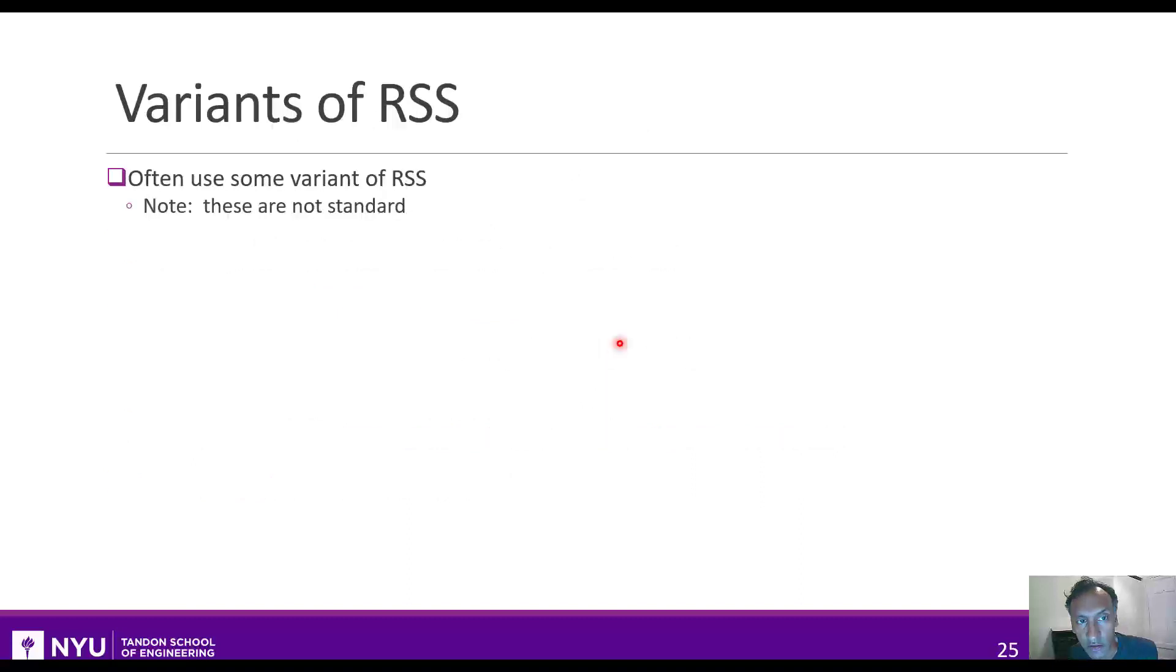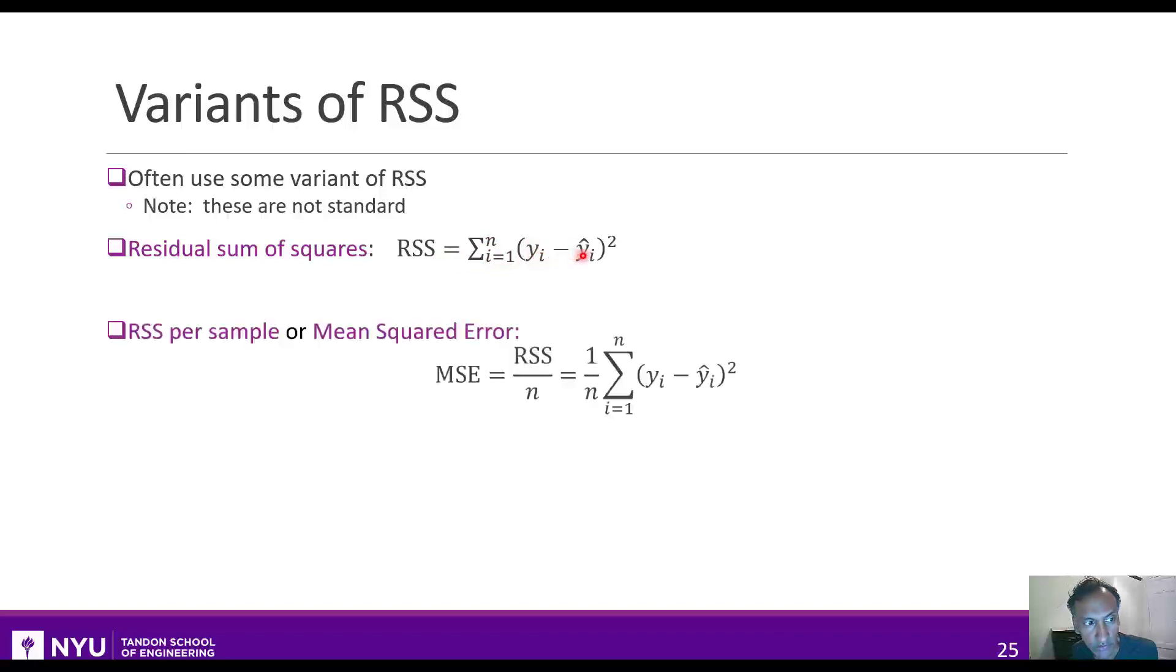Now, before I go on, there are a lot of other terms, or variants, of the residual sum of squares. The terminology is not exactly standard, so I'll just describe what I'll use in this course. This first is the residual sum of squares that we just saw, which is just the sum of the squared differences between the true values and the predicted values. You'll also sometimes see the residual sum of squares normalized by the sample, or sometimes called the mean squared error, which is just the residual sum of squares divided by n. So it's kind of the average squared difference over the training dataset.